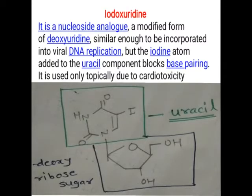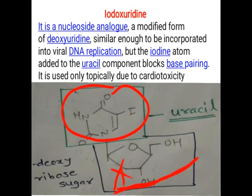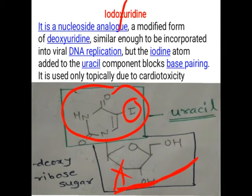The next drug is idoxuridine. This is the structure of uracil combined with deoxyribose sugar — if a hydroxy group is present it becomes ribose sugar; if absent it becomes deoxyribose sugar. In idoxuridine, an iodine atom is added to the uracil component. Without iodine, this compound (uracil with sugar) would simply be called uridine, but due to the presence of iodine it is called idoxuridine.